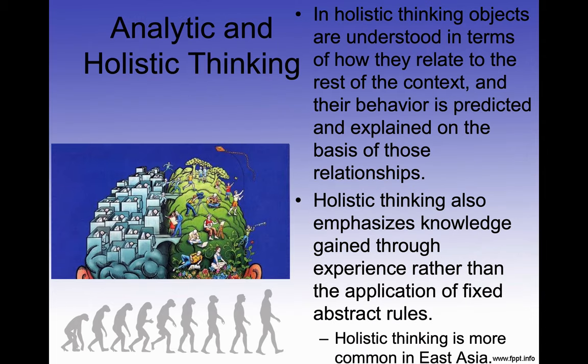In holistic thinking, objects are understood in terms of how they relate to the rest of the context, and their behavior is predicted and explained on the basis of those relationships. So holistic thinkers are looking for relationships, while in Western thinking we're trying to break everything down into component parts. Holistic thinking also emphasizes knowledge gained through experience rather than the application of fixed abstract rules. Holistic thinking is more common in East Asia — specifically Korea, China, and Japan.